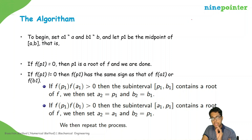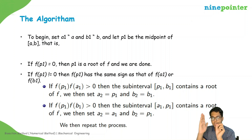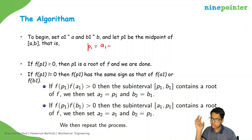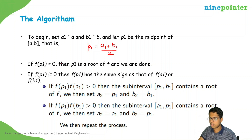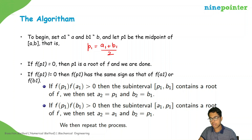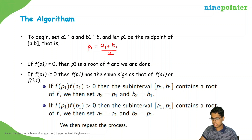So a is my starting point and b is my ending point, and p is defined as the midpoint. So p₁ equals (a₁ + b₁) / 2. Then we check the value of the function at p₁. If f(p₁) equals zero, we have found our root. If not, we check if f(p₁) and f(a₁) have the same sign. If they have the same sign, then f(p₁) and f(b₁) must have different signs, and by the intermediate value theorem there is a root there — so we limit our subinterval to that section.